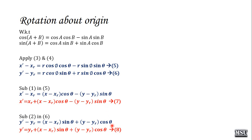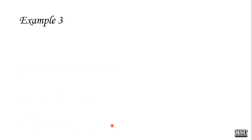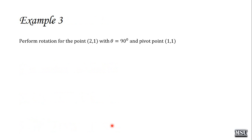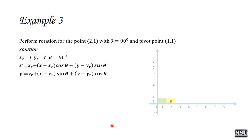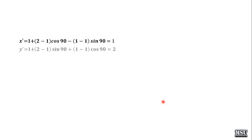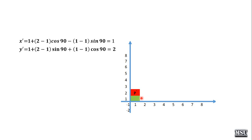Example: Perform rotation for the point (2, 1) with theta = 90° and pivot point (1, 1). Here xr = 1, yr = 1, theta = 90°. Applying the pivot point rotation formula, we get x dash = 1 and y dash = 2. Initially the point is at (2, 1). With respect to the pivot point (shown in green), the point rotates to (1, 2).